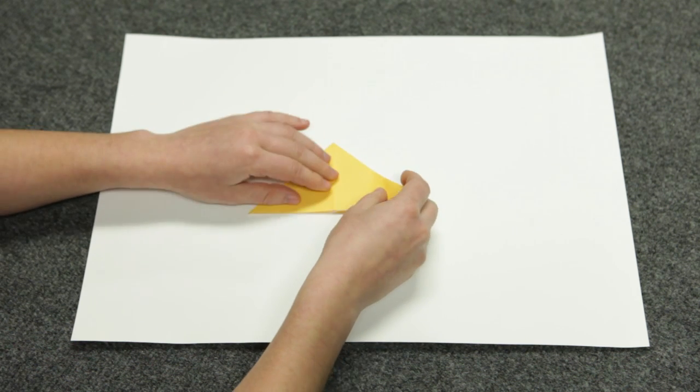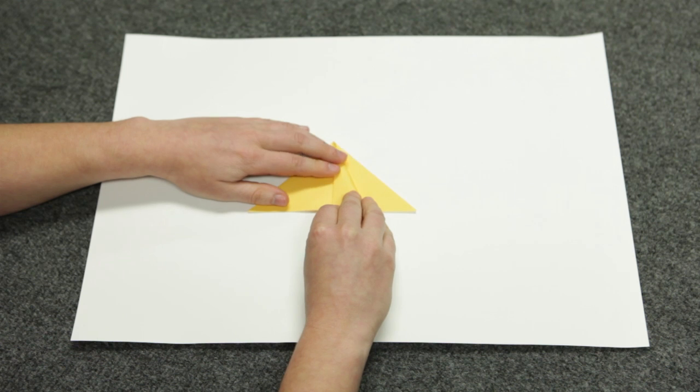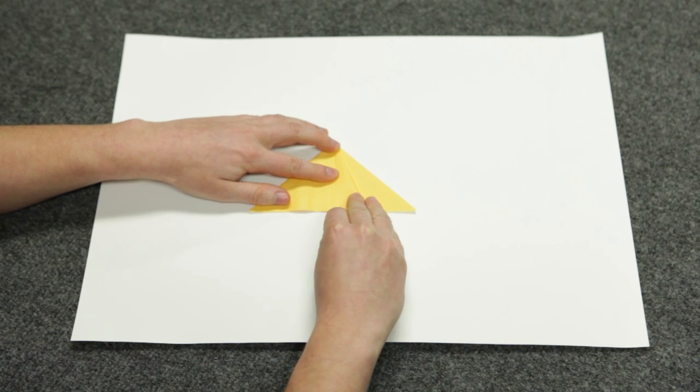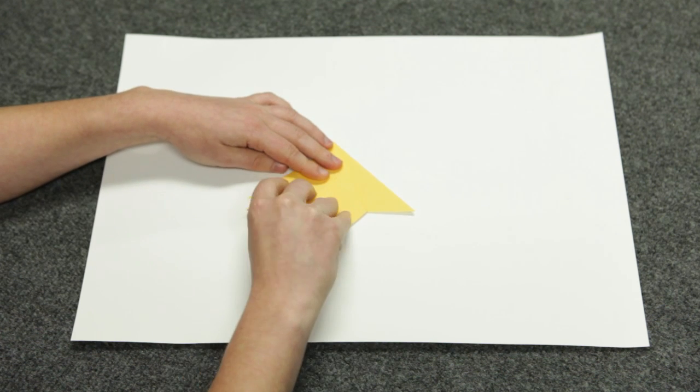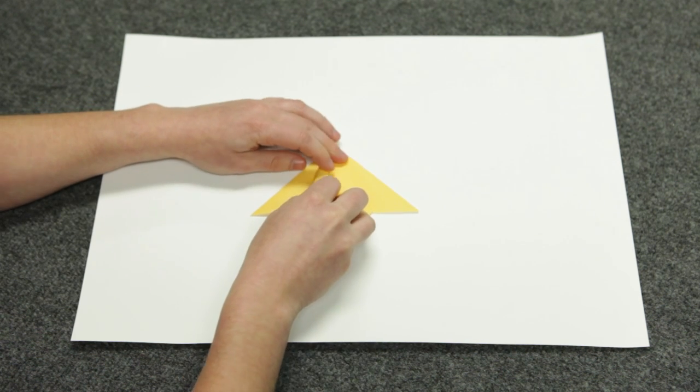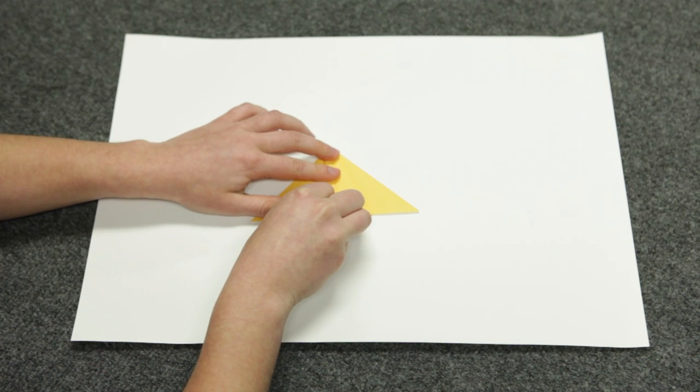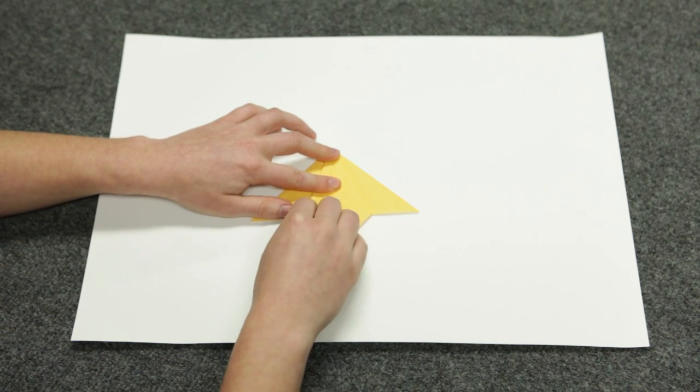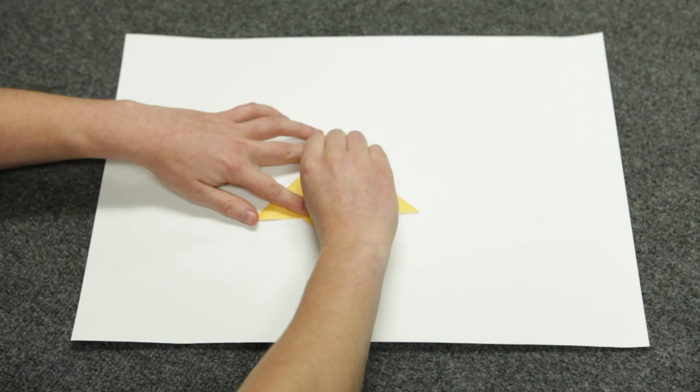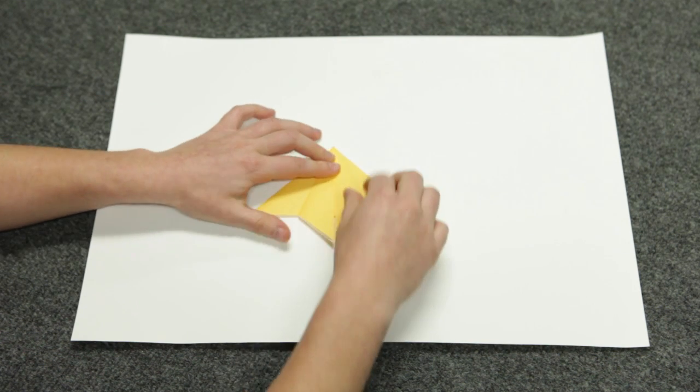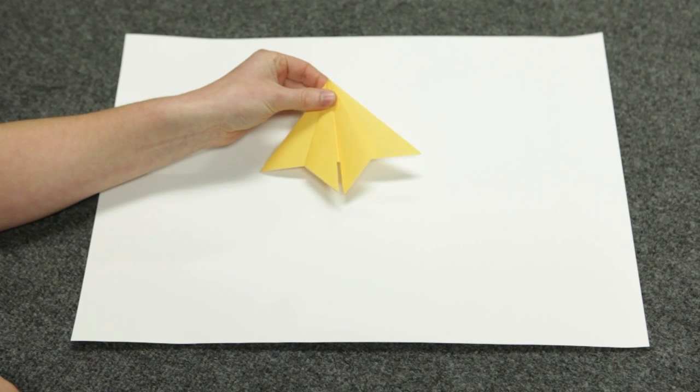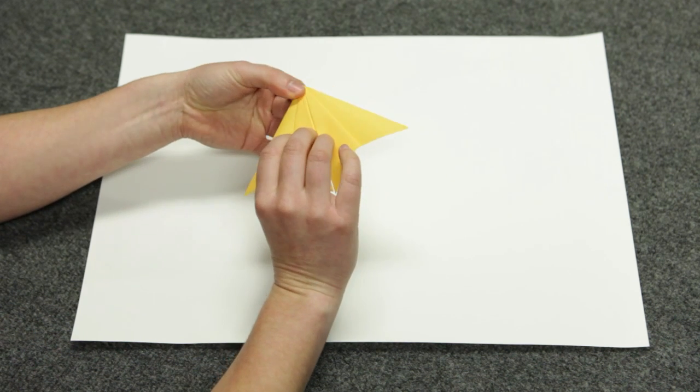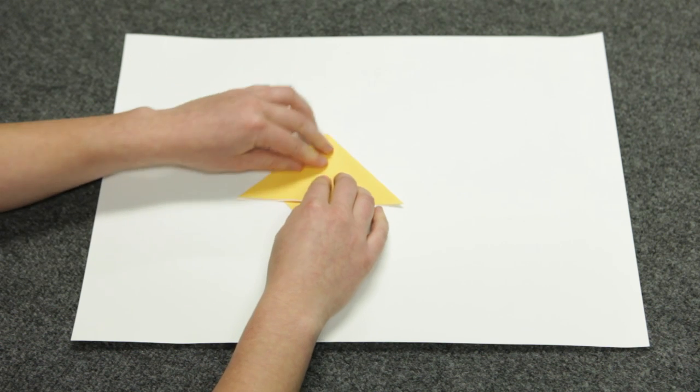Next fold the outer edge of the top layer only to the center line of the triangle. It should look like this. Now that we've done the top layer, we're going to flip it over and repeat that step on the back.